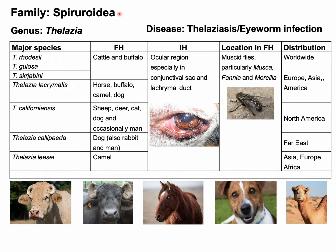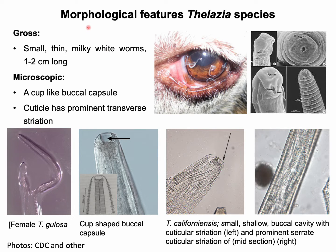Among these parasites, Telagia calipeda, also known as the oriental eyeworm, and Telagia californiansis have zoonotic significance. Telagia gulosa has very little zoonotic significance. It is also noted that the eyeworm of poultry is Oxyspirura mansoni, and for humans it is Loa loa. Morphological features of Telagia species are discussed next.